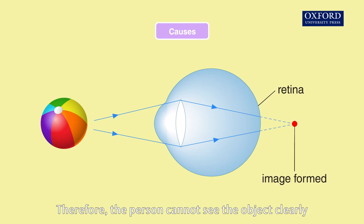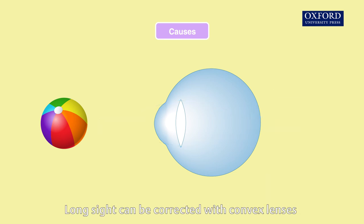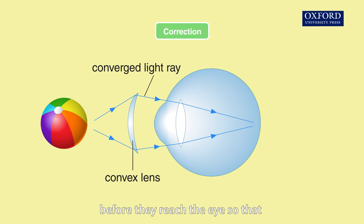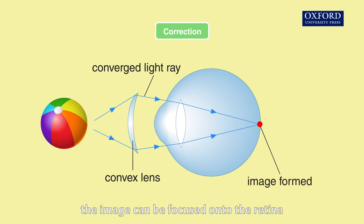Therefore, the person cannot see the object clearly. Long sight can be corrected with convex lenses. The lens converges light rays from the near object before they reach the eye, so that the image can be focused onto the retina.